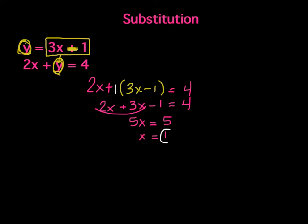I'm now going to take this 1, because remember, my answer is going to be an ordered pair and I know x is 1. I'm going to take this 1 and plug it into this equation where it says y equals 3 times the x minus 1. And that gives me 2.